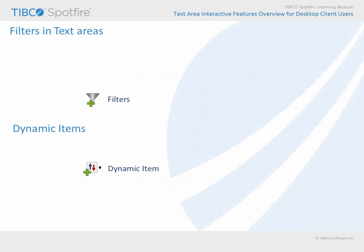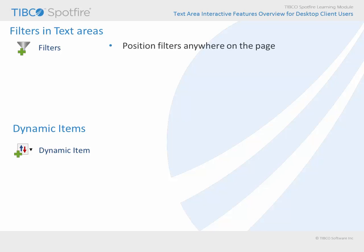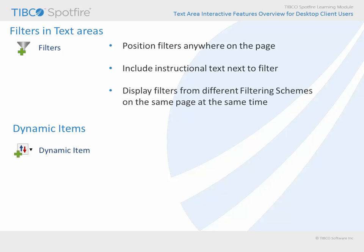You may include filters in text areas rather than the filters panel. Presenting filters in text areas may provide several advantages. First, filters in text areas can be positioned pretty much anywhere on the page. And, because they are presented in a text area, you can position them right next to instructional text or images and make them an integral part of the workflow directions. In addition, inserting filters into text areas affords the capability to display filters from different filtering schemes on the same page at the same time, something which cannot be done within the filters panel.